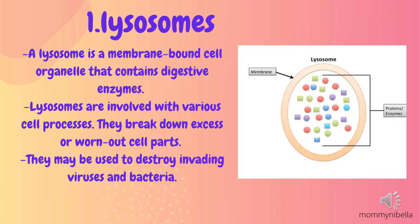Parts that are only present in an animal cell. Number one: lysosomes. A lysosome is a membrane-bound cell organelle that contains digestive enzymes. Lysosomes are involved in various cell processes — they break down excess or worn-out cell parts and may be used to destroy invading viruses and bacteria.